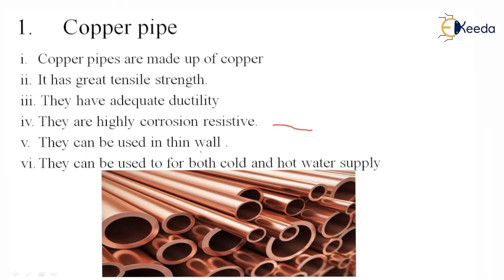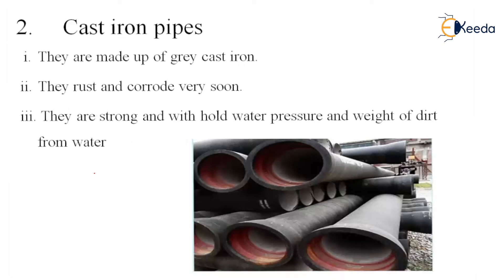Copper pipes can be used in thin walls and are suitable for both cold and hot water supply. Second, cast iron pipes. They are made up of grey cast iron. They rust and corrode very easily, irrespective of the pH of the water. However, they are strong and can hold water pressure and the weight of dirt from the water. The cross section is heavy and they are used for long distance water travelling.